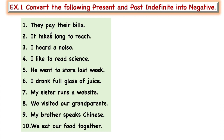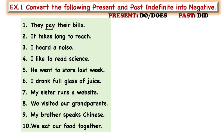'They pay their bills' — the main verb is 'pay' and the helping verb of present tense is 'do' and 'does.' If you have to write a negative sentence using 'not,' a helping verb is needed. In be verbs you don't need helping verbs, but in other cases you need the helping verb to use 'not.' Since 'pay' is a main verb here with no helping verb, we will need to add one to make it negative.